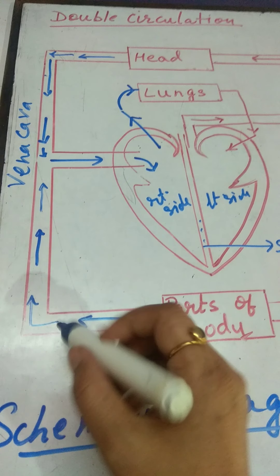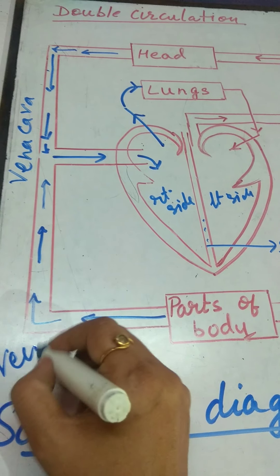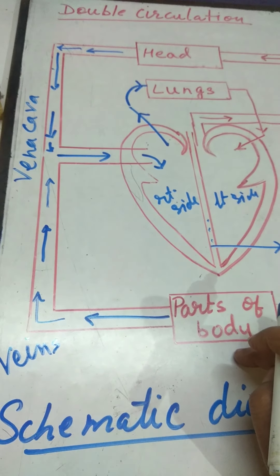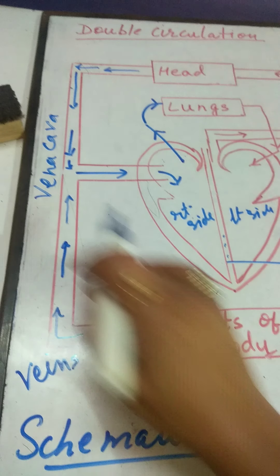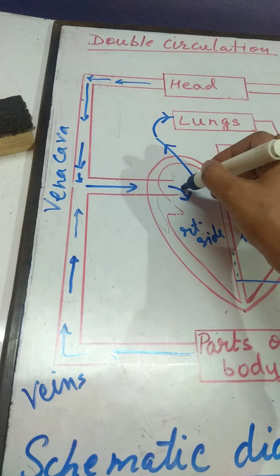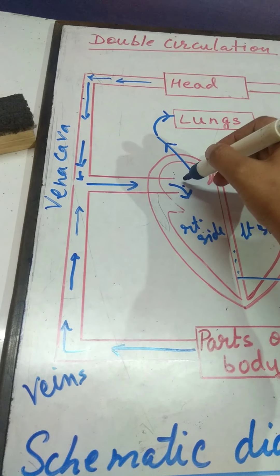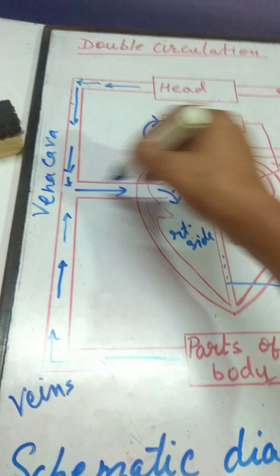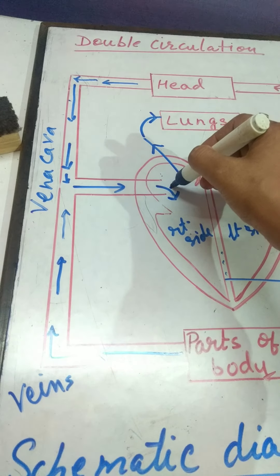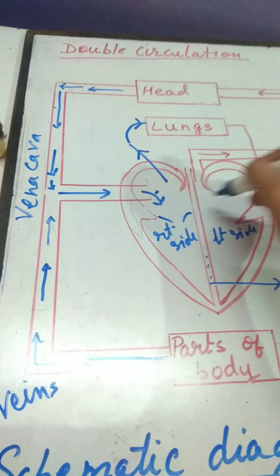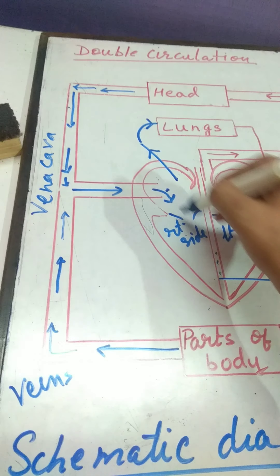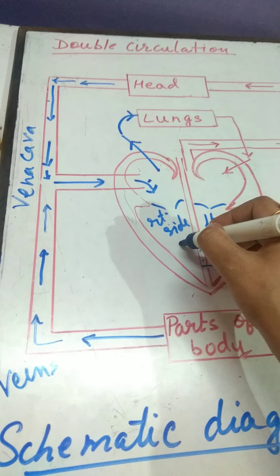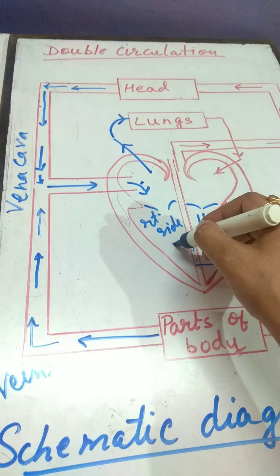So, veins are carrying impure blood from different parts of the body to the heart. It enters into the right auricle. Blood through veins enters the right auricle, and from auricle it enters the ventricle. Now, this is impure blood only.